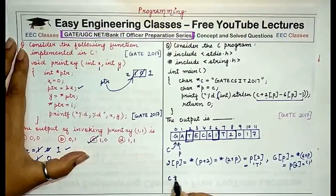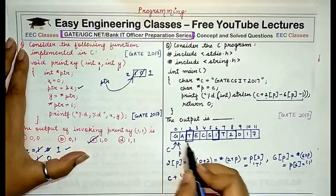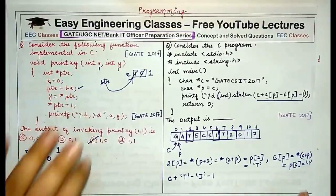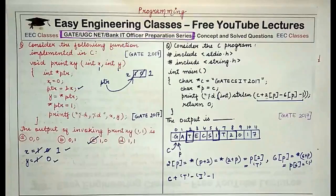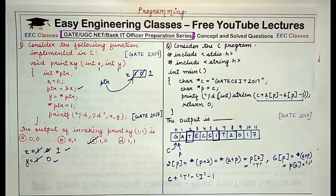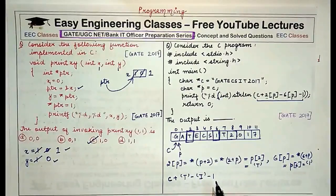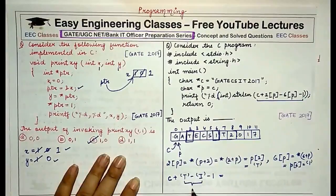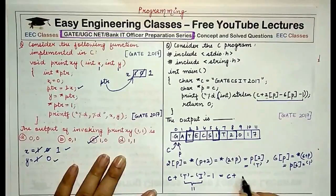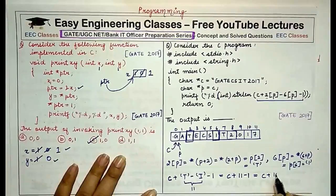So the expression reduces to c + 't' - 'i' - 1. Since c is the pointer to the start of the array, 't' minus 'i' means subtracting their ASCII values. You don't need to remember the exact ASCII values — for subtraction you can just count the letters between the two characters. Counting from 'i': j, k, l, m, n, o, p, q, r, s, t — that is 11 positions. So the expression reduces to c + 10.